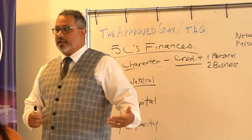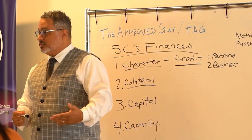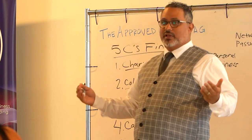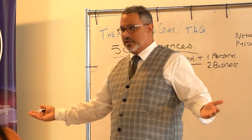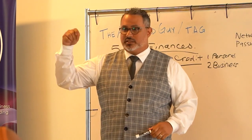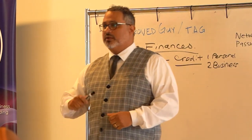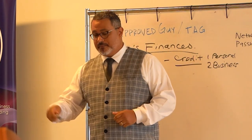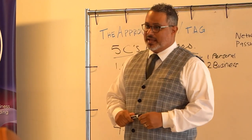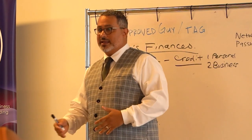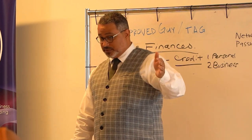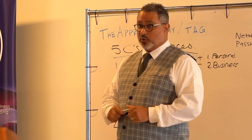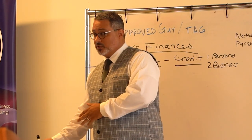If you have no collateral and the lender requires it, you can have excellent personal credit and excellent business credit, but if you don't meet the collateral requirement, you're not going to get approved. With SBA loans — the 7a and 504 — the 7a can be used for working capital with 10-year terms at prime plus 2.75%. You can get SBA loans as startups. I work with about 15 banks, ranging from $25,000 up to $5 million.